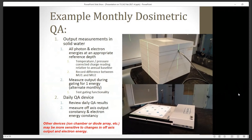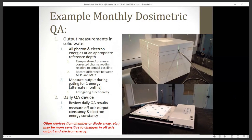For monthly dosimetry: start with output measurements in solid water with temperature/pressure correction, get a charge reading relative to an annual baseline at an appropriate depth. Also measure output during gating for one energy — alternated monthly — getting integrated charge with and without gating. Then run the daily QA device, review daily QA results, and measure off-axis output constancy and electron energy constancy, using either the daily QA device or another device with better resolution.